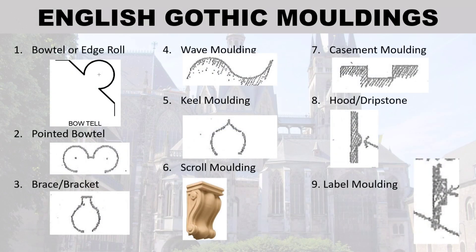English Gothic moldings: number eight — hood or dripstone; and number nine — label molding.